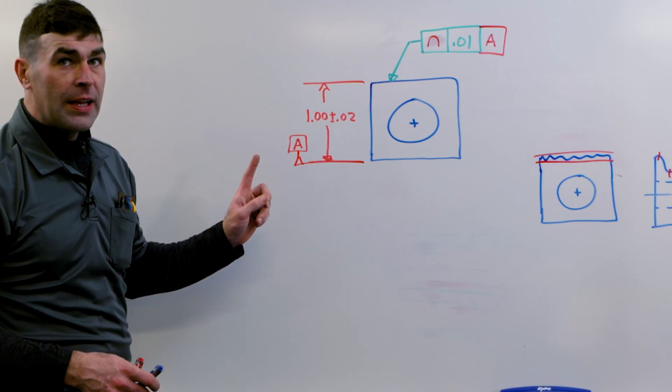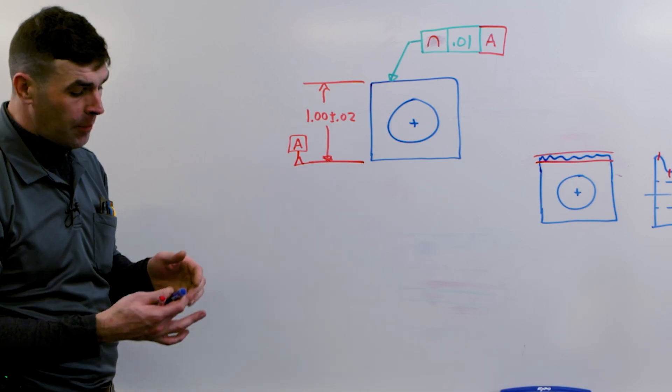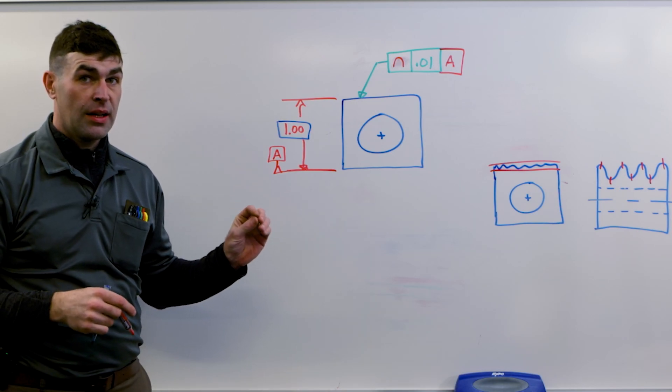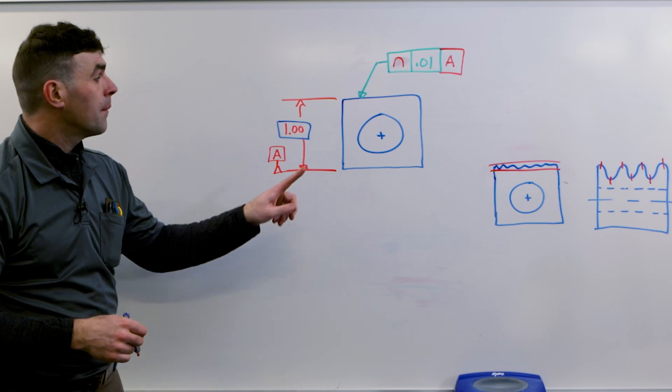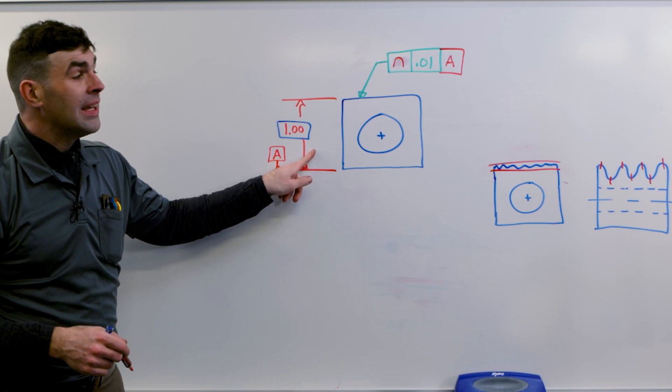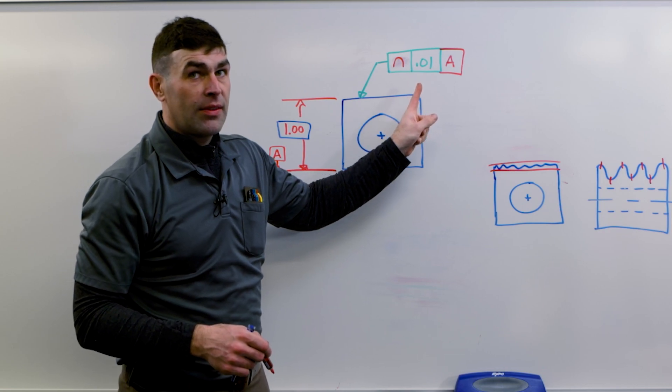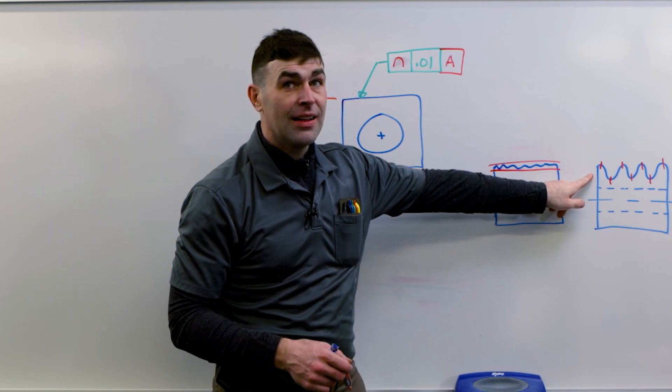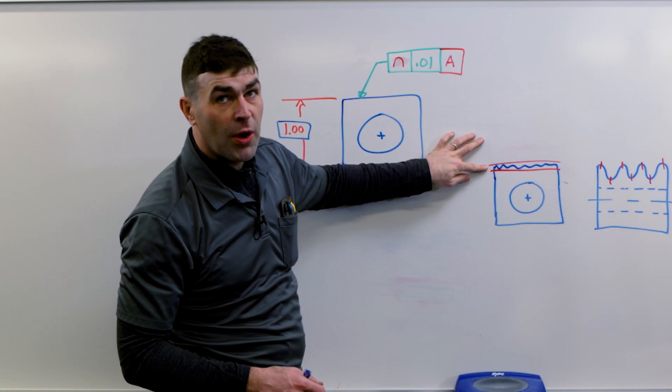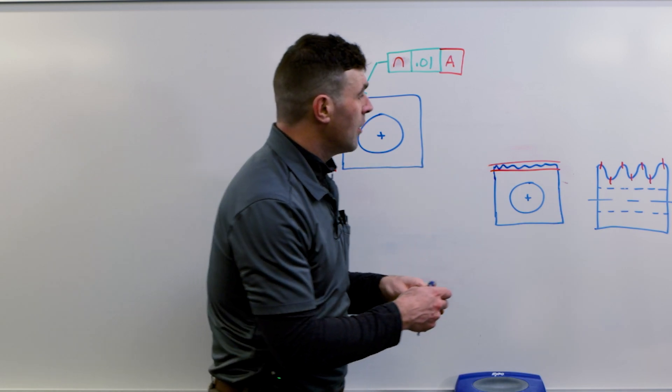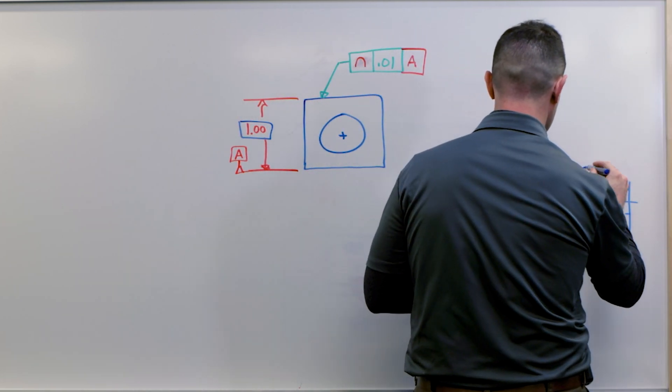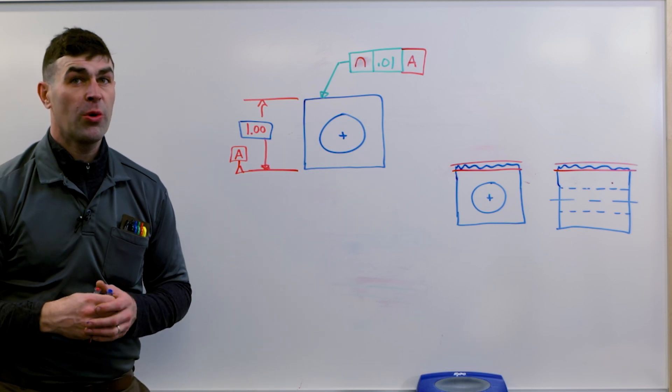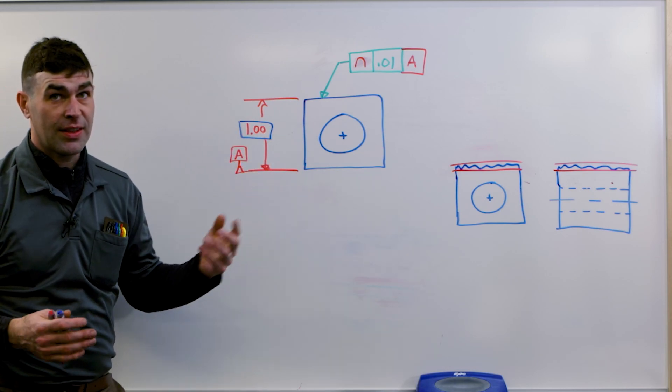Now where this can kind of break down, if we made this basic, it's the same thing as profile of a surface. Because there's no variation here, we're checking individual line elements, but they're all exactly one inch from our datum simulator. So this is not allowed. We're one inch away, we're checking every spot. It essentially becomes a profile of a surface. Now I'm just showing you this just in case you ever see it. This is kind of a no-no.